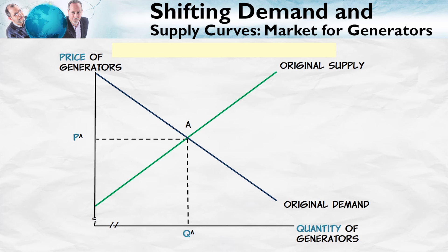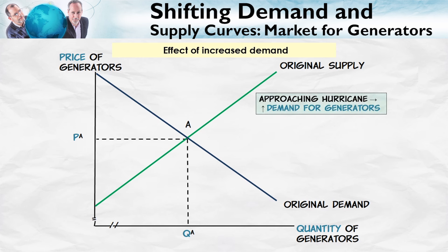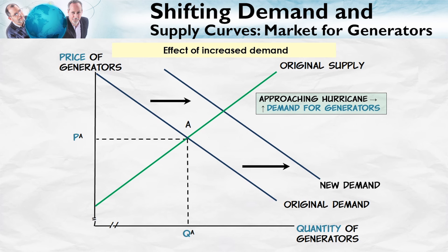Now let's look at the market for portable generators. Let's suppose that a hurricane is approaching. What will the approaching hurricane do to the demand for generators? Well, it will increase the demand, shifting the demand curve up and to the right. The model predicts an increased price of generators and a greater quantity exchanged. Also, pretty good prediction.